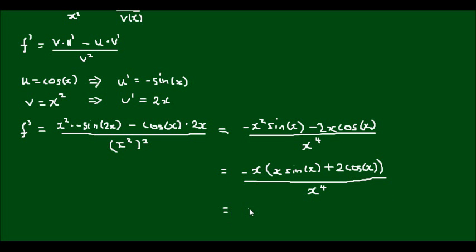If I write on the next line, this leaves me with negative outside of x sin(x) plus 2 cos(x), all over x to the power of 3.